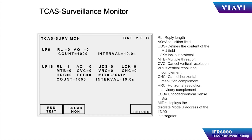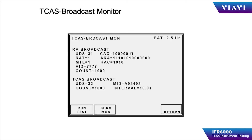Pressing the MONSUFT key takes the operator to the interrogation monitor screen. This will display the types and quantity of the interrogations from the TCAS being tested. While in the resolution advisory cycle, the TCAS will broadcast resolution advisory status messages. These can be monitored on the TCAS broadcast monitor page.